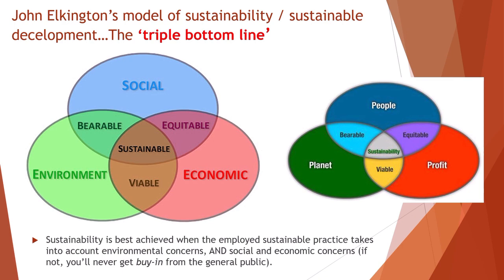Historically, businesses operated in service solely to the financial bottom line. In 1994, author and entrepreneur John Elkington introduced the concept of the triple bottom line with hopes of transforming the financial accounting focus-based system to a comprehensive approach that measures impact and success. As a result of the triple bottom line theory and application, some businesses began to recognize the connection among environmental health, social well-being, and organizations' financial success and resilience.